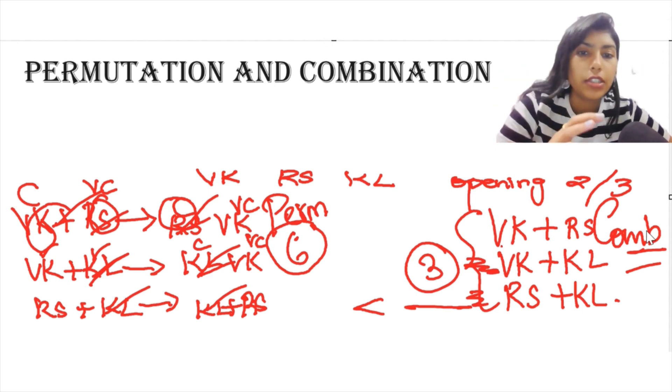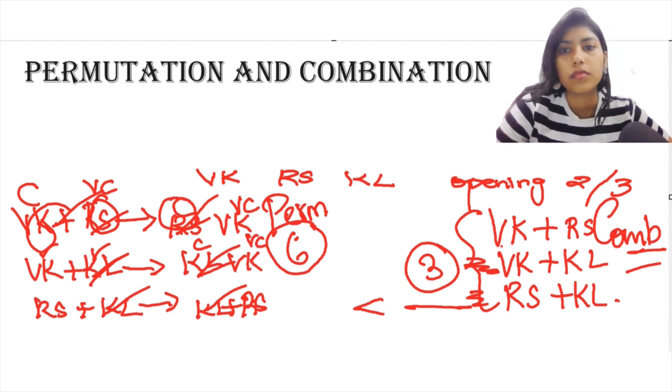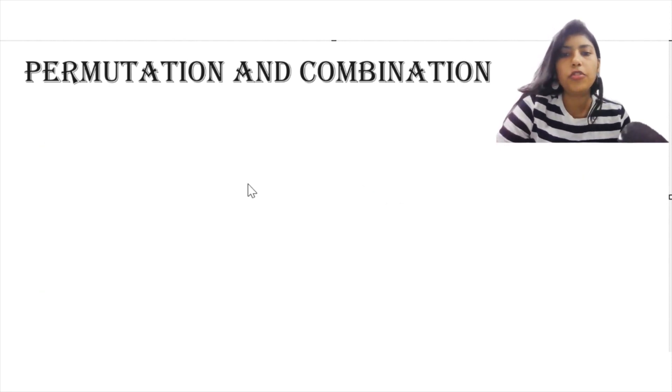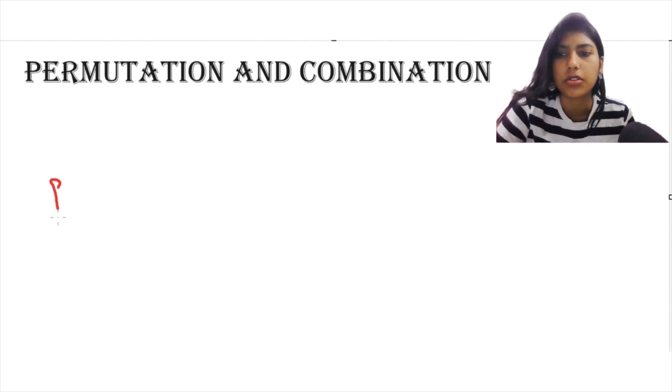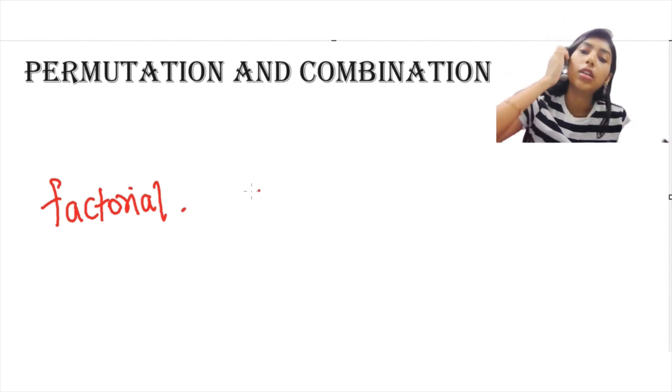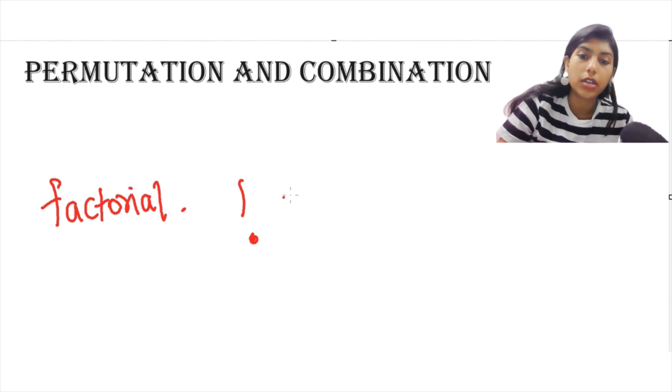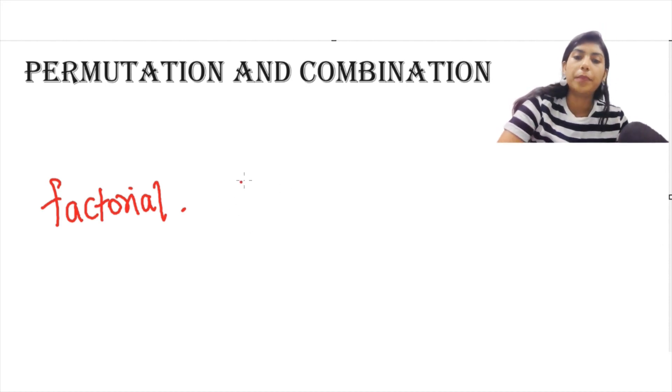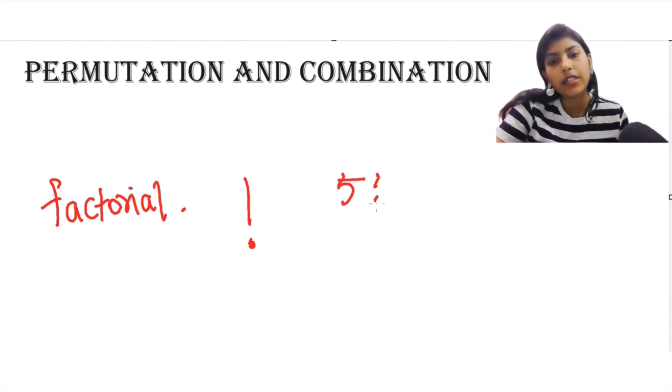Basically, this is the difference and all you need to remember right now is the formulae to use whenever you find the logic. Before jumping into the formula, there is something that you need to know which you would have already come across. That is the concept of factorial. Factorial is nothing but, it is represented by exclamation mark and let's see what is the meaning of factorial. Basically, it follows a number.